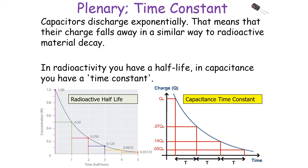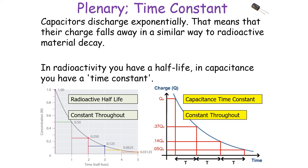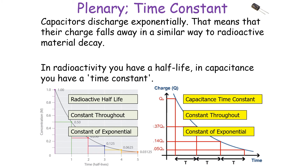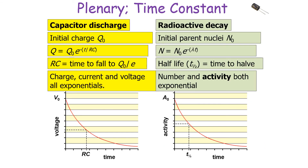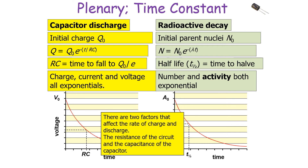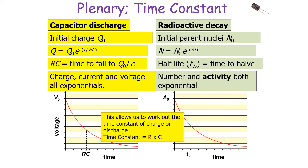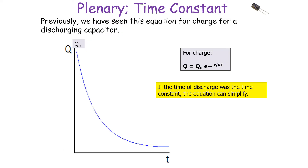Capacitors discharge exponentially — their charge falls away in a similar way to radioactive material decay. In radioactivity you have half-life; in capacitance you have something called the time constant. Both are constants of an exponential, meaning the value decreases by a certain percentage in a fixed time frame. Whilst radioactive half-life is the time taken for the value to fall by 50%, the capacitance time constant is the time taken for the value to fall to 37% of its starting value. The two factors affecting the rate of charge and discharge are the resistance of the circuit and the capacitance, giving time constant T equals RC.